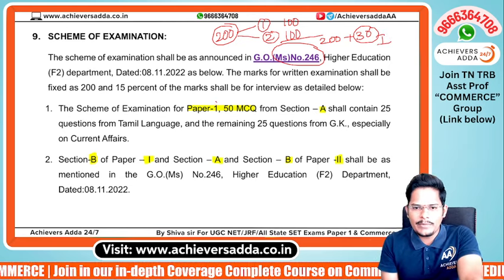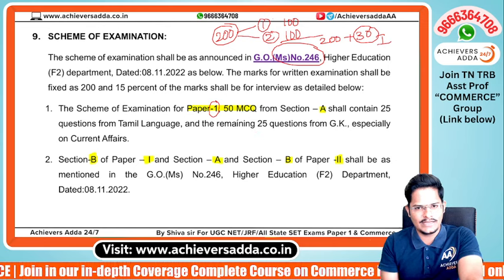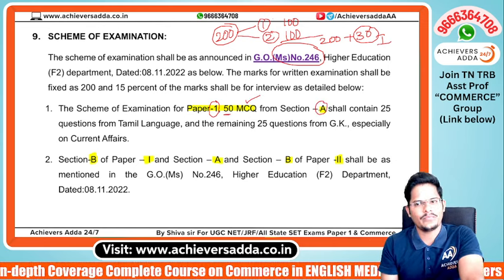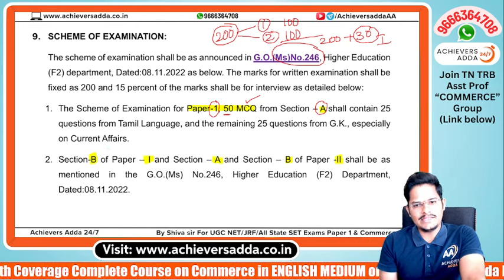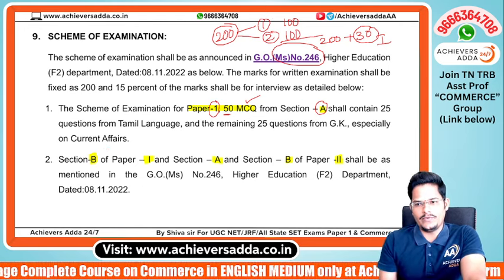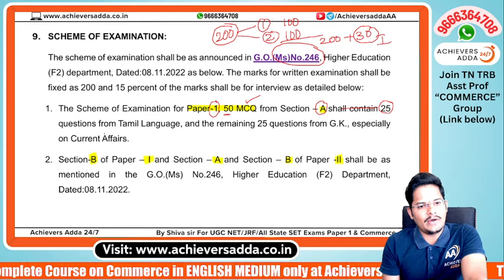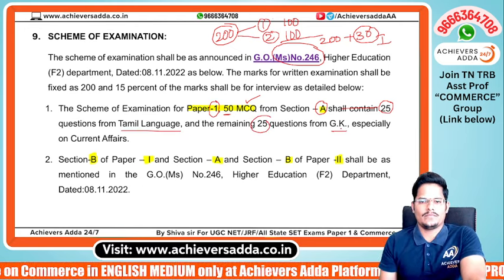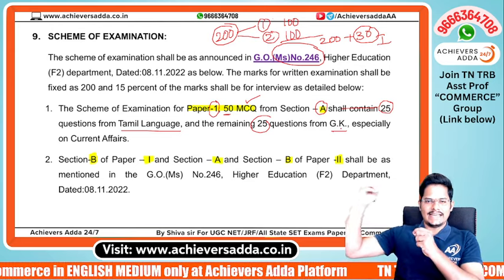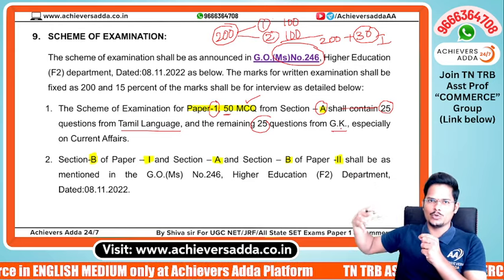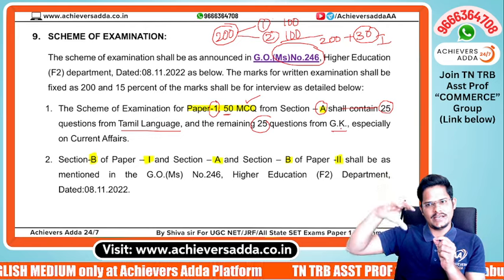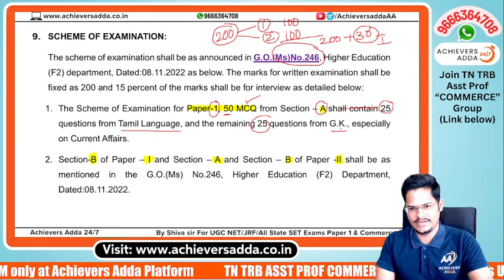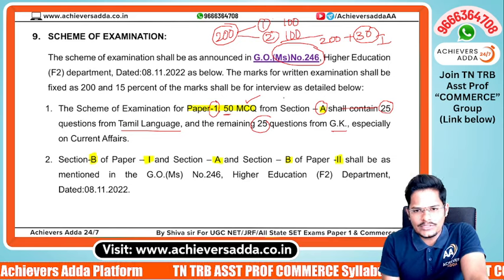In Paper 1, the first 100 marks — 50 marks are MCQ-based from Section A. Within those 50 MCQs, 25 questions are from Tamil language and 25 are from General Knowledge and Current Affairs. So Section A of Paper 1 is divided into two parts: 25 marks for Tamil language and 25 marks for GK and current affairs.